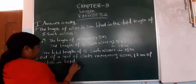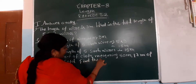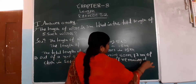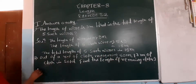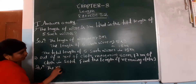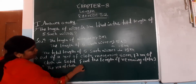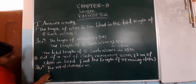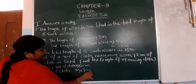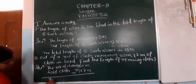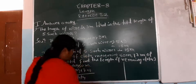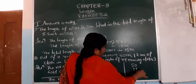Find the length of the remaining cloth. The total row of cloth is 50 meter. Sold cloth is 17 meter. You find the remaining cloth. To find the remaining cloth, you subtract: 50 minus 17.